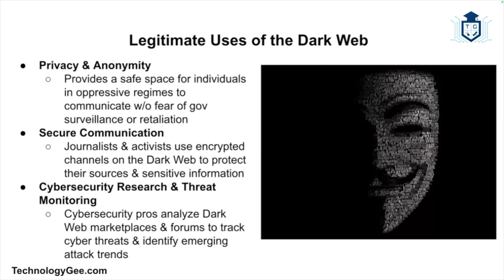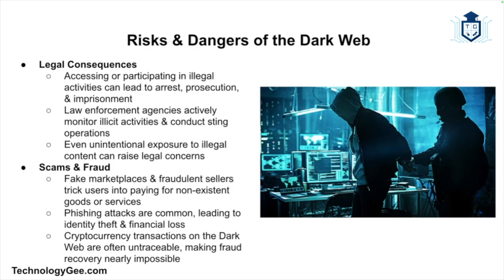While the dark web is often associated with illegal activities, it also serves legitimate purposes. For example, it provides a platform for individuals living in oppressive regimes to communicate and share information without fear of government surveillance or retaliation. Journalists, whistleblowers, and political dissidents often use the dark web to expose corruption and human rights abuses. Activists and journalists may use it to communicate securely with sources, and cybersecurity professionals and researchers may explore it to monitor cyber threats and gather intelligence on emerging risks.